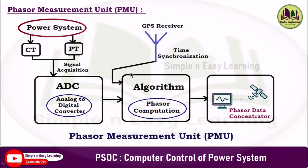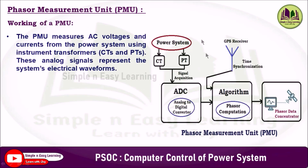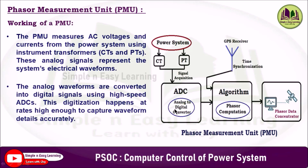The phasor measurement unit measures AC voltage and current from the power system using instrument transformers such as CT and PT. These analog signals represent the system's electrical waveform. The analog waveforms are converted into digital signals using a high-speed ADC, and this digitization happens at rates high enough to capture waveform details accurately.